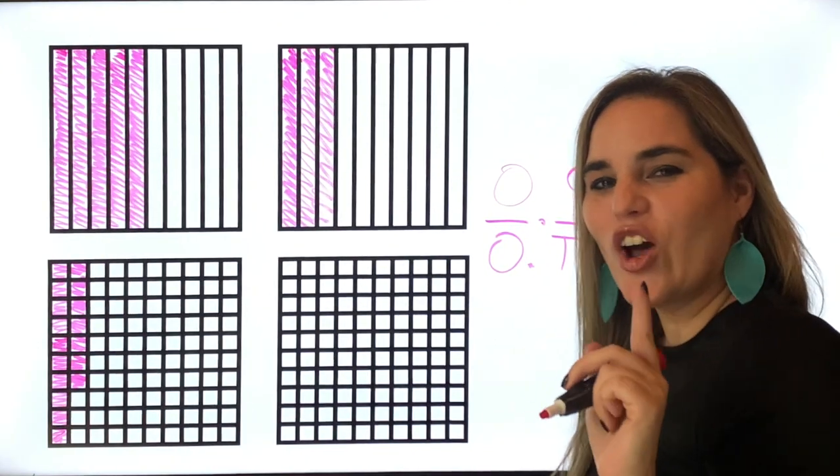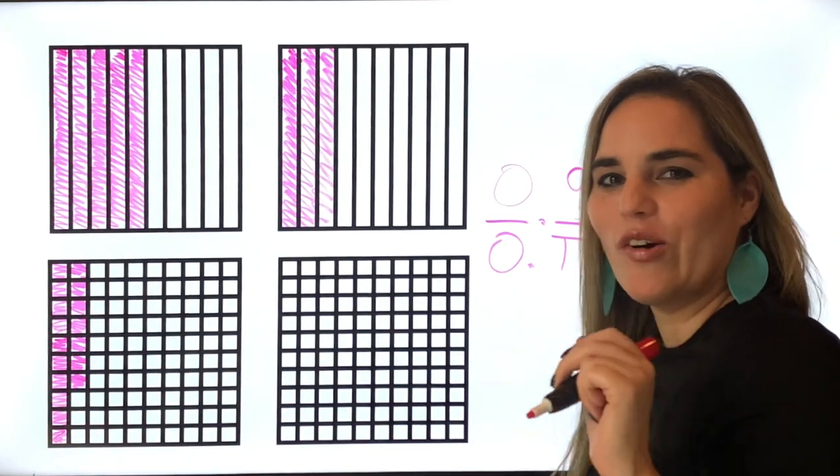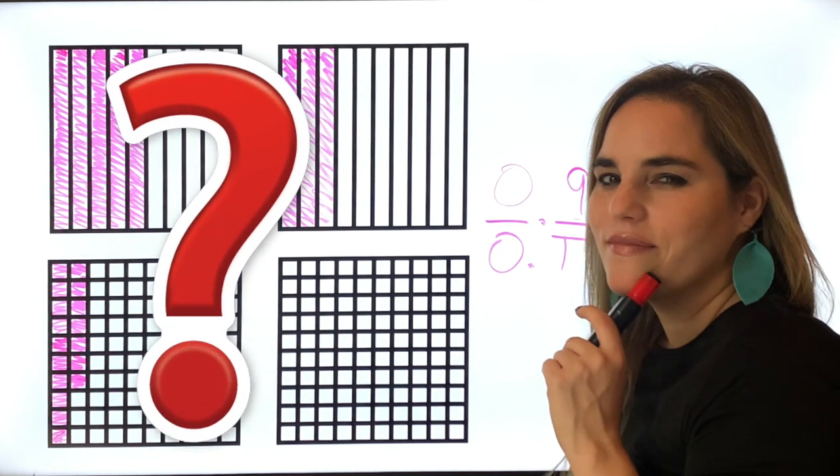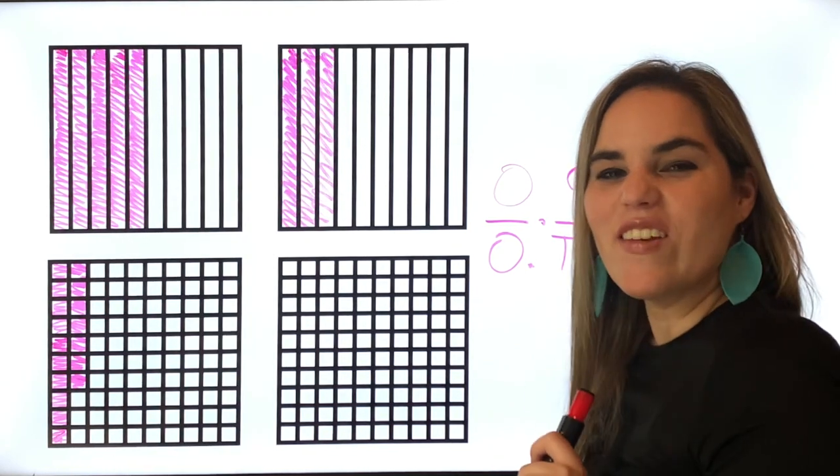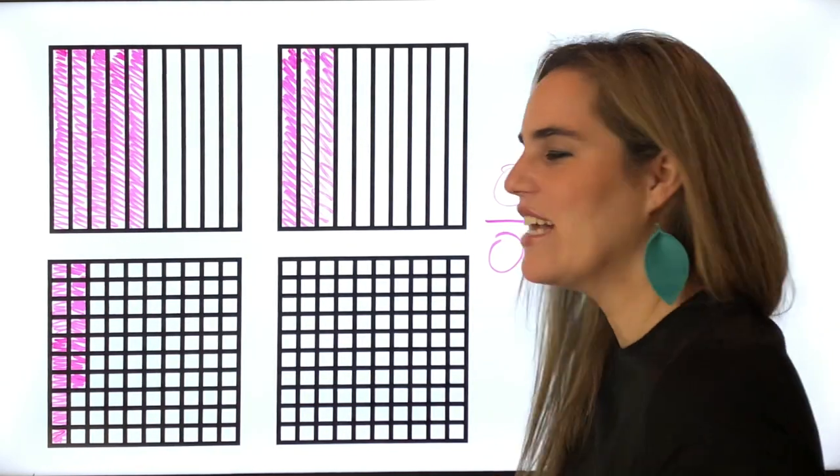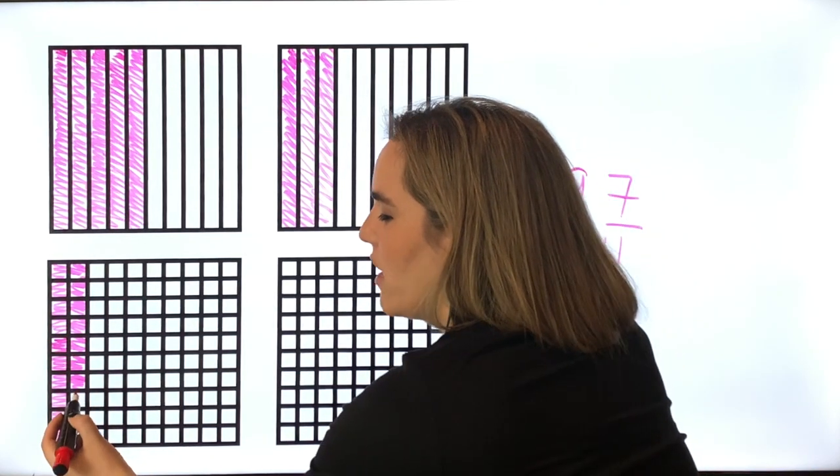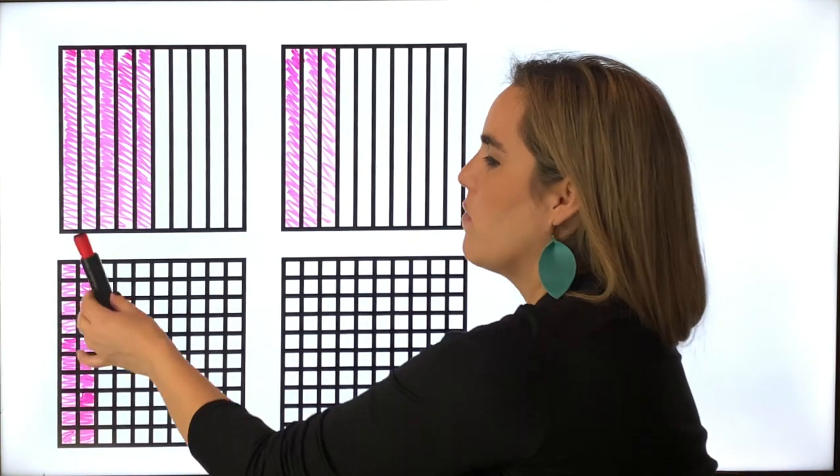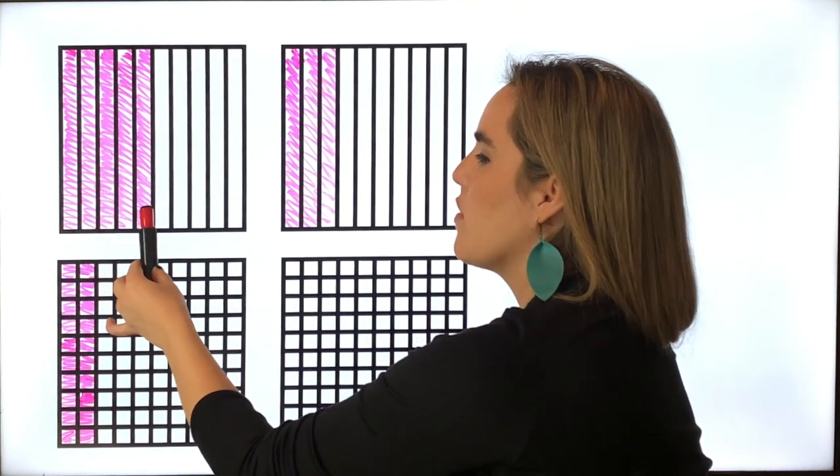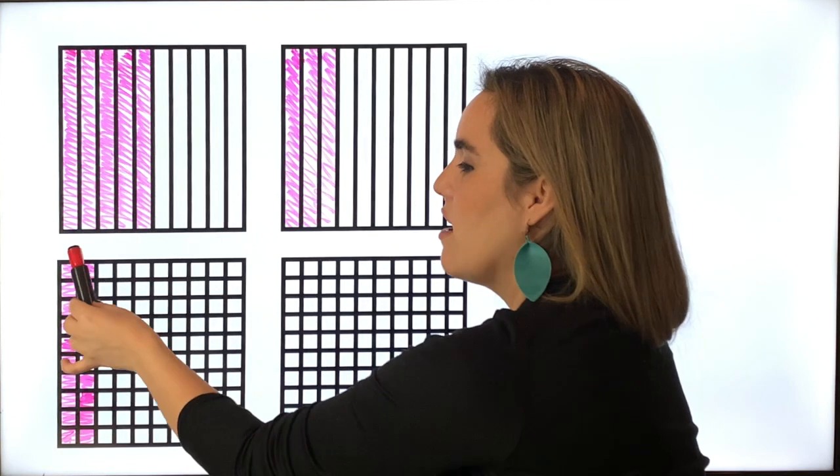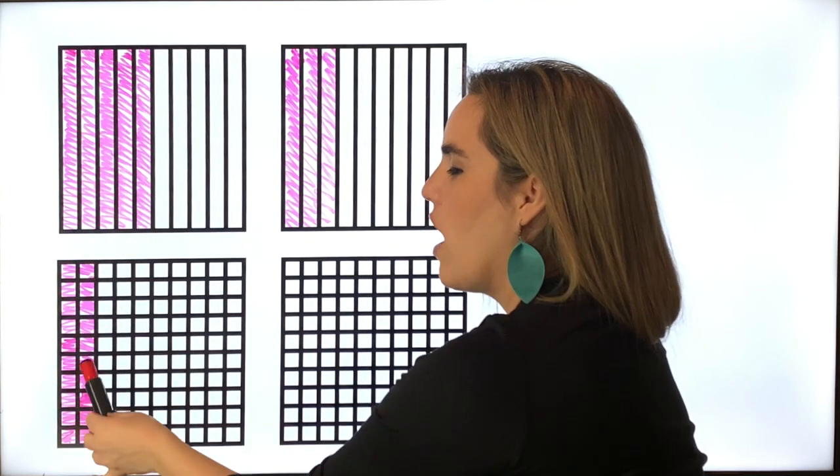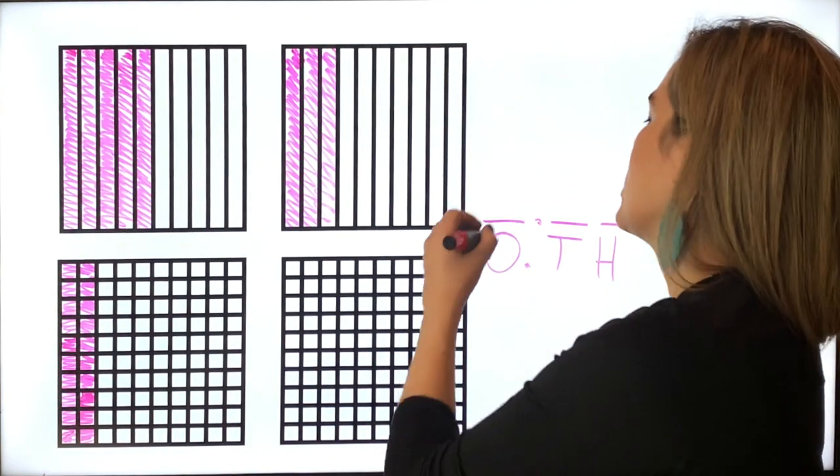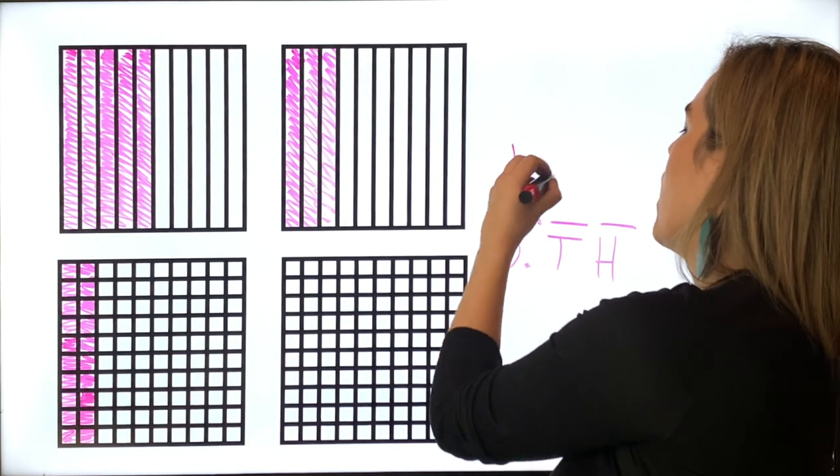Can you tell me how many more hundreds do we need to get to one whole? If you said three, yes, you're one hundred percent right. Let's add three more. And if so, if we add them, it's 10, 20, 30, 40, 50, 60, 70, 80, 90, 100 hundreds, which is equivalent to one whole.